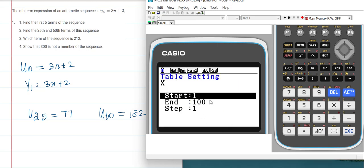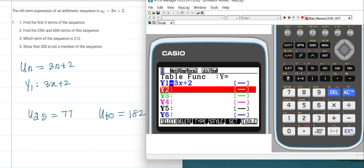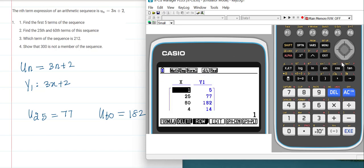Here I made the table up to 100 terms, so we can scroll down and see which term of the sequence would be 212. You can see, scroll down—we have to scroll till this number Y1 gets a value of...